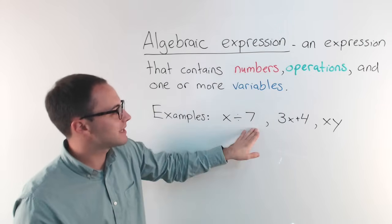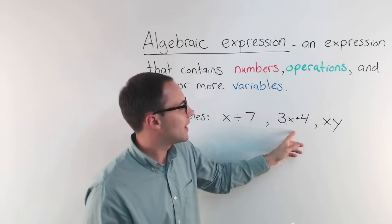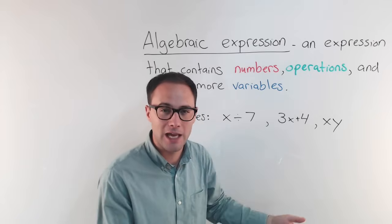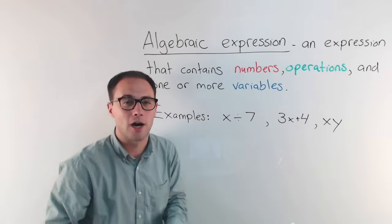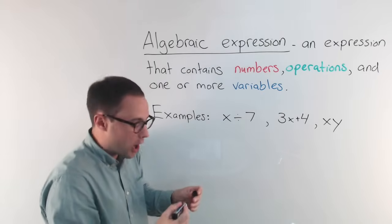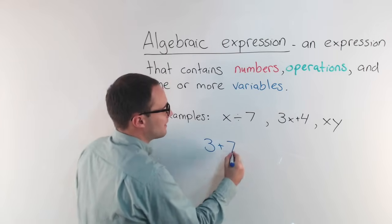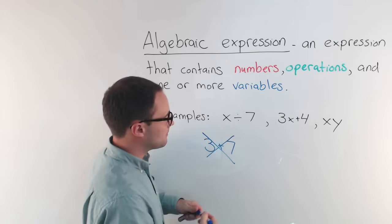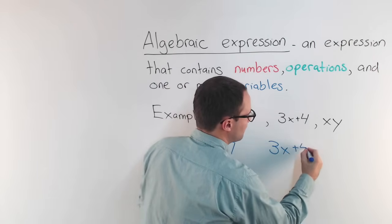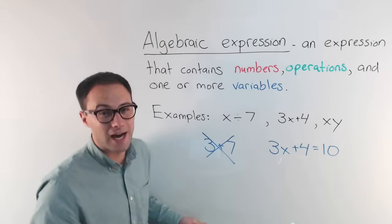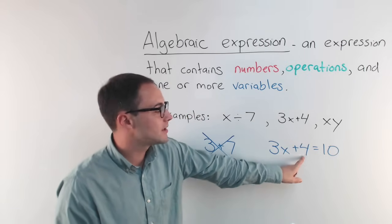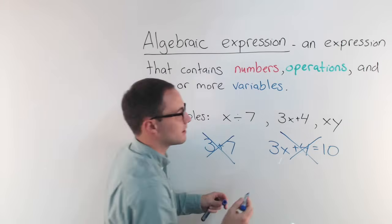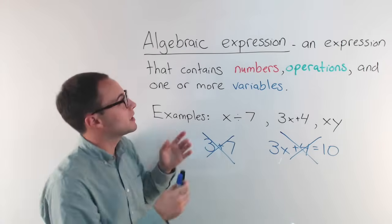Some examples: x divided by 7 — we've got a variable, an operation, and a number. Same thing with 3x plus 4, and xy. You don't see the operation, but when they're next to each other that means multiplication, so there is an operation. Those are all algebraic expressions. Some that aren't: 3 plus 7 has no variable, so that's just a numerical expression. And 3x plus 4 equals 10 — even though it has variables, operations, and numbers, it has an equal sign, which means it's an equation, not an expression.